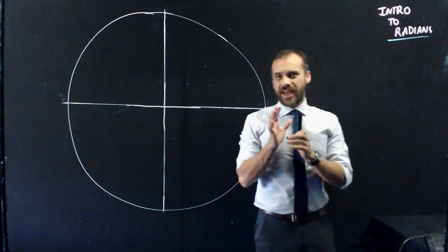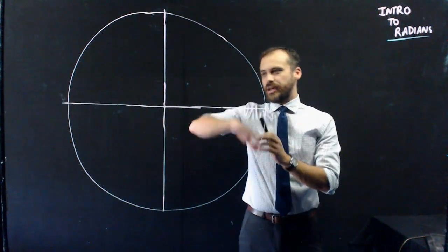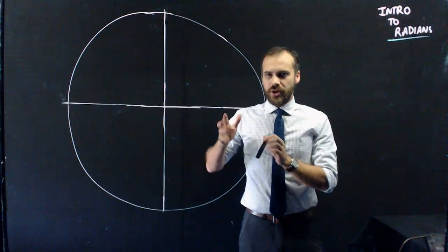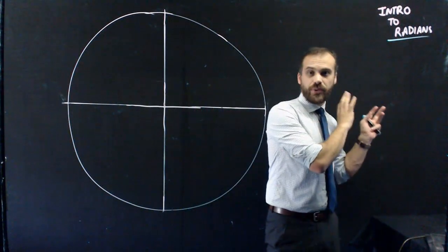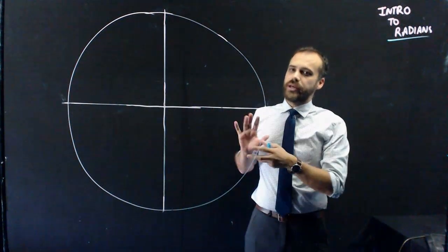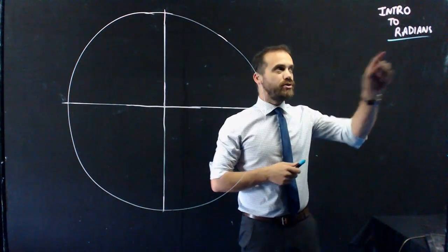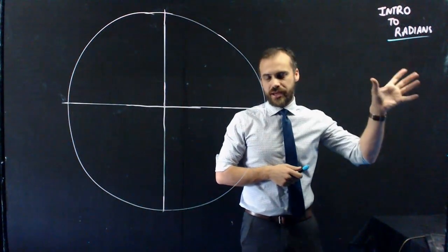So all your life you've been talking about angles in degrees, 360 degrees in a circle. Well, we're going to get rid of that now and we're going to come up with a whole new way to measure angles. And that new way is called a radian.